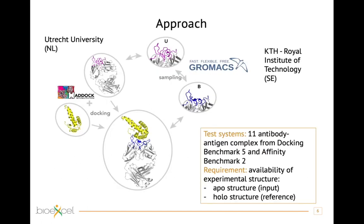The approach we are following is to combine docking — performed with HADDOCK — and molecular dynamics techniques performed with GROMACS. First we need a test pool of antibody-antigen complexes. We took 11 complexes from docking benchmarks and affinity benchmarks. A requirement for those structures is the availability of experimental structures both in the APO form and the HOLO form. We use the APO form of the antibody and antigen as input, while the HOLO form serves as reference to test our model.